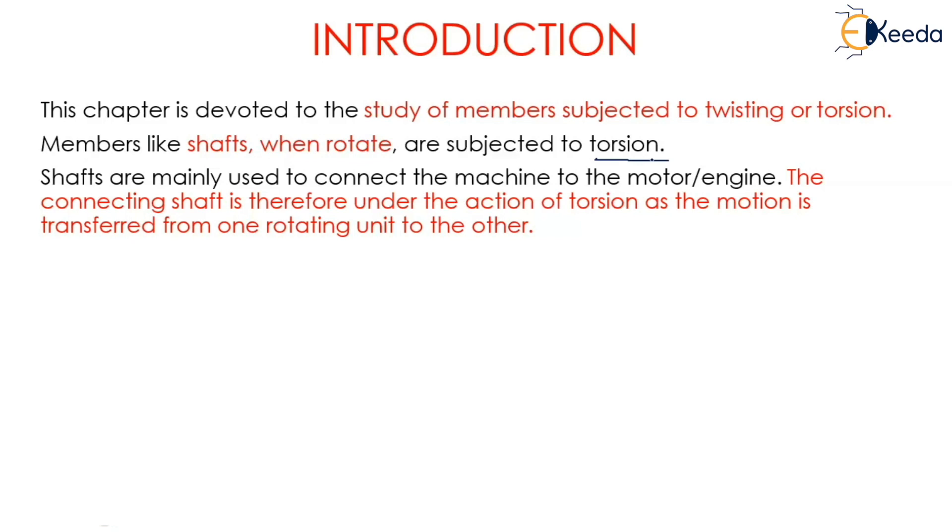So what happens if we have a shaft? If you apply movement at both ends in opposite directions, a twisting action takes place. That twisting action is also known as torsion. We shall first understand the theory of pure torsion and then derive the relation for pure torsion.